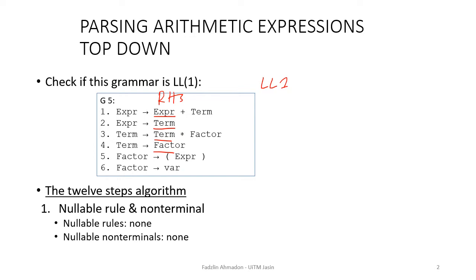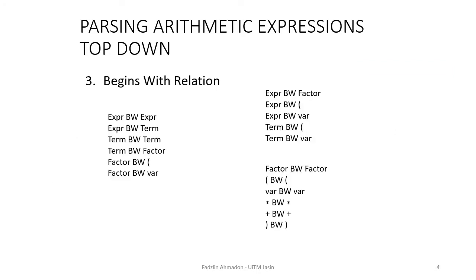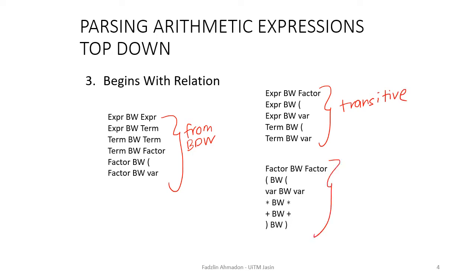I'm going to go through the steps to find the selection sets very quickly. Starting with step 1: find nullable rules and nullable non-terminals. We do not have any nullable rule and we do not have any nullable non-terminal. Step 2 is the begins-directly-with (BDW) relation. We have: expression BDW expression, BDW term, term BDW term, term BDW factor, factor BDW left parenthesis, and factor BDW var. These are the BDW relations — the direct, transitive, and reflexive closures.